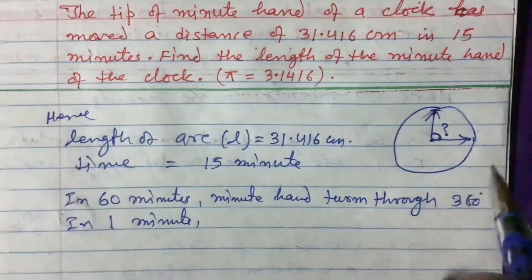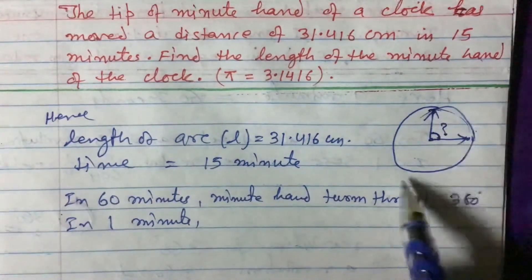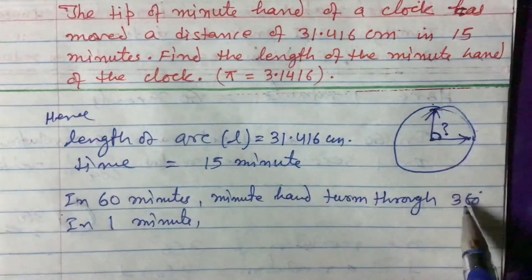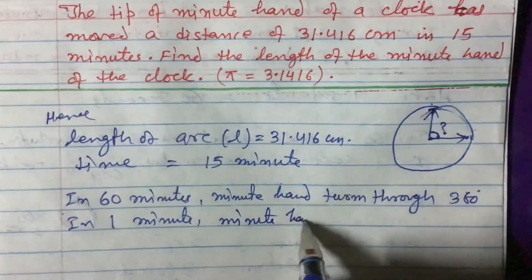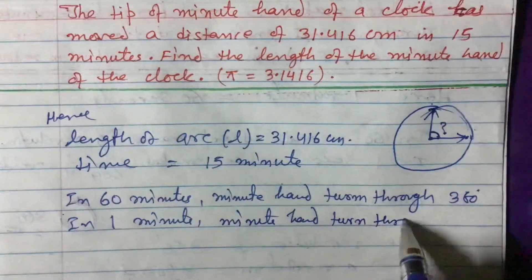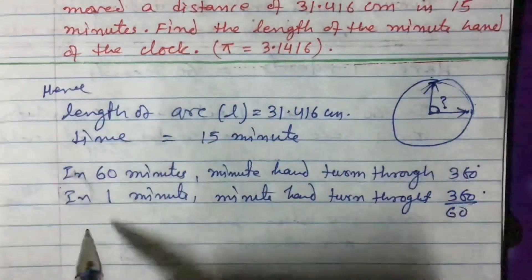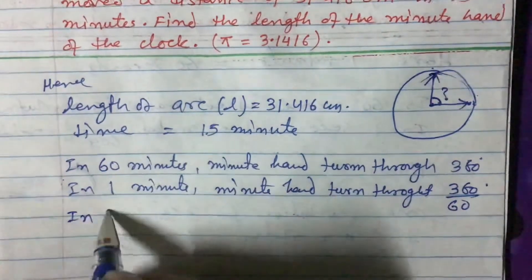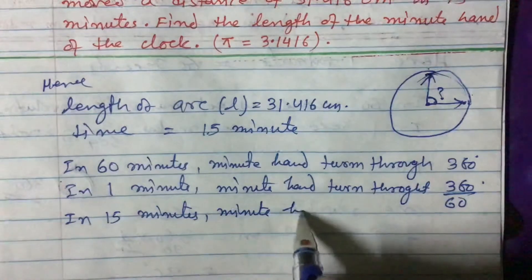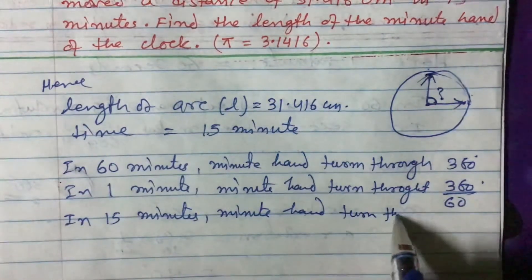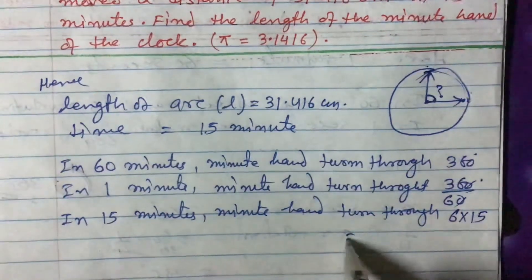As I have taught in the previous chapter, while moving one whole round the minute hand makes 360 degrees, and it takes 60 minutes to complete one full round. So in one minute, the minute hand turns through 360 divided by 60 degrees. Therefore, in 15 minutes, the minute hand turns through 6 times 15, which equals 90 degrees. So theta equals 90 degrees.